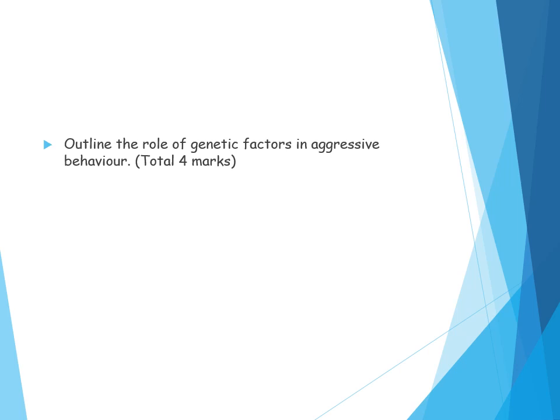For an AO1-type question such as 'outline the role of genetic factors in aggression,' you could discuss how MAOA is an important factor. If you have the low activity version of the gene, you might not break down serotonin, noradrenaline, and dopamine effectively. This may cause hypersensitivity to the fight or flight response, overreaction to stimuli in an aggressive way, and less control over impulsive behaviour. You could also mention that males with the low activity version of the gene were more likely to commit violent criminal behaviour.